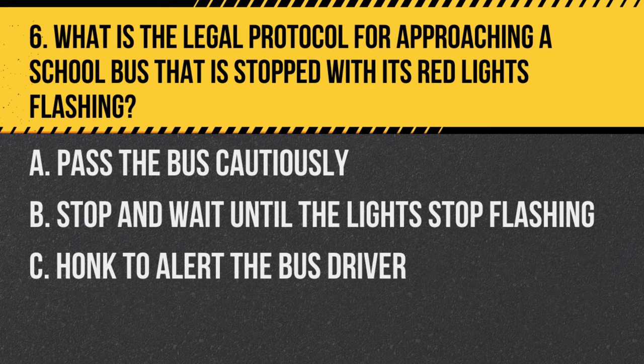Question 6. What is the legal protocol for approaching a school bus that is stopped with its red lights flashing? A. Pass the bus cautiously. B. Stop and wait until the lights stop flashing. C. Honk to alert the bus driver. Answer: B. Stop and wait until the lights stop flashing. Drivers must stop for a school bus with flashing red lights to ensure the safety of children boarding or leaving the bus.